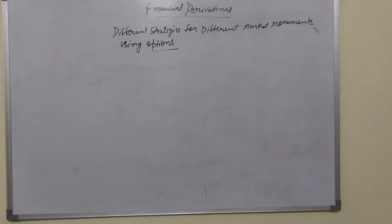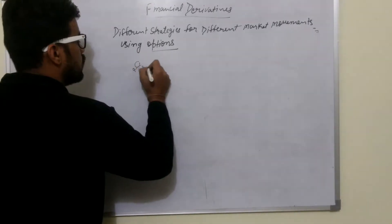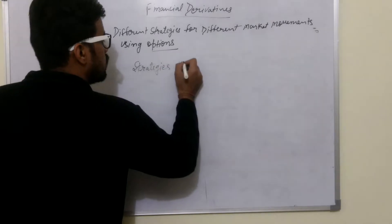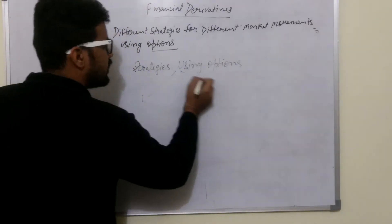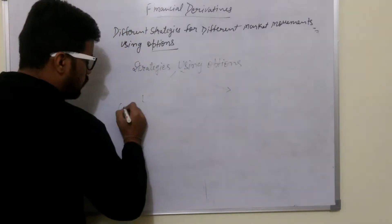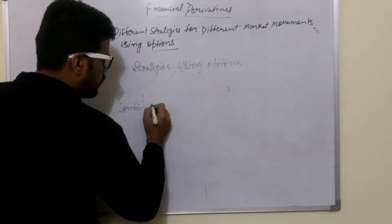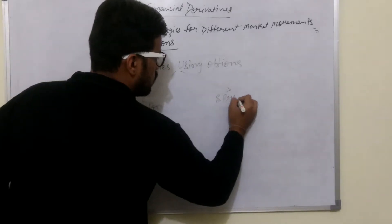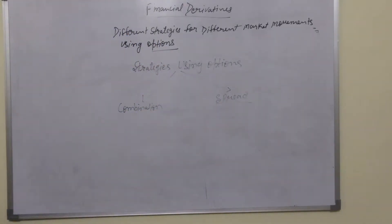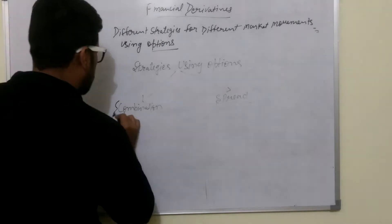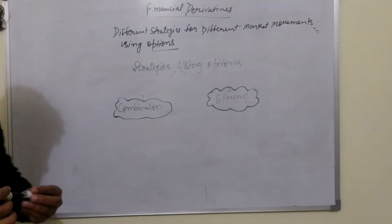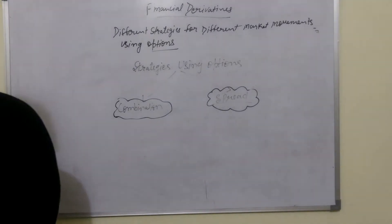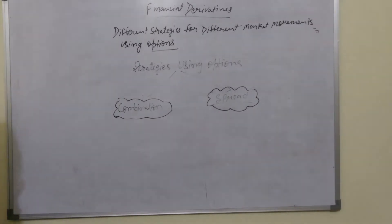We have categorized strategies using options into two categories: one is combination and second is spread. Now we need to understand what is combination and what is spread.